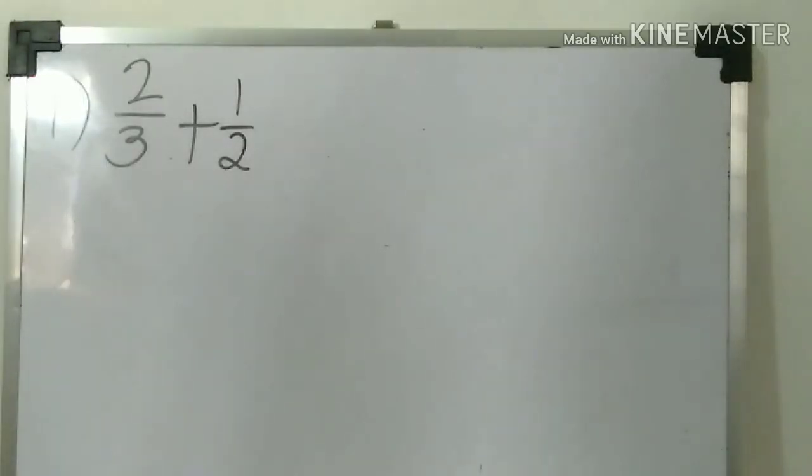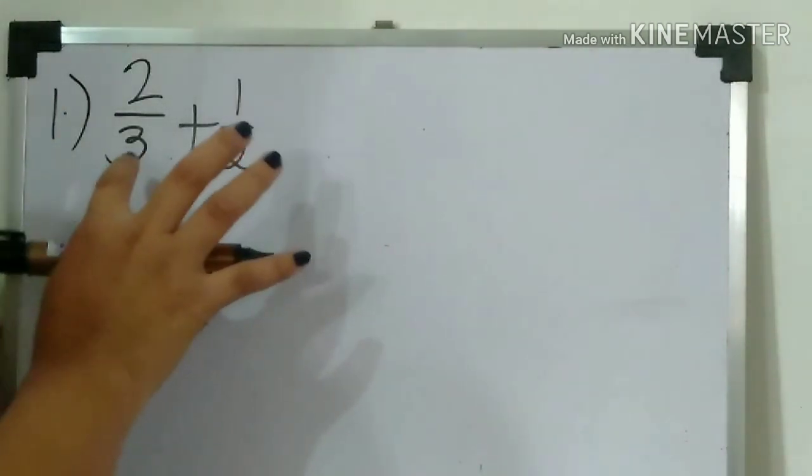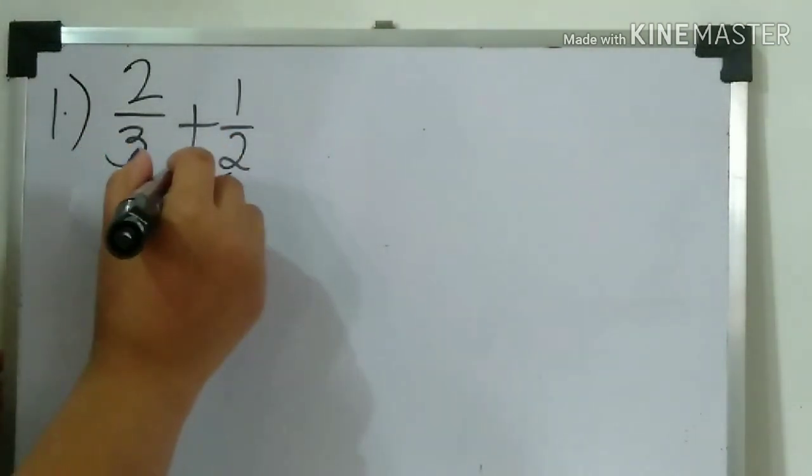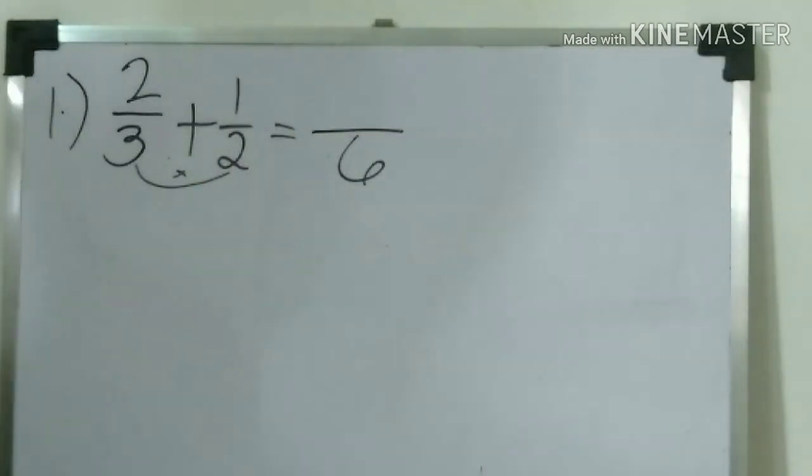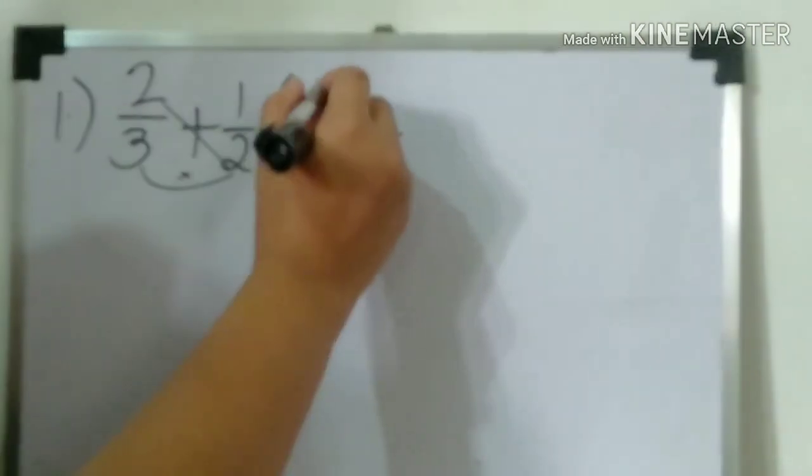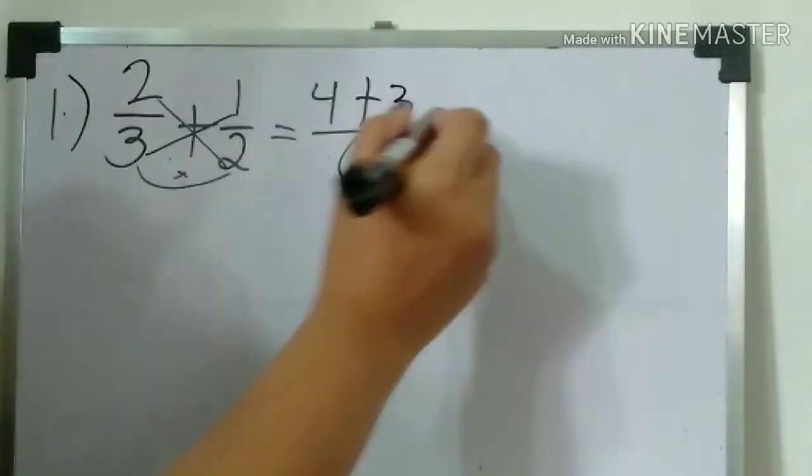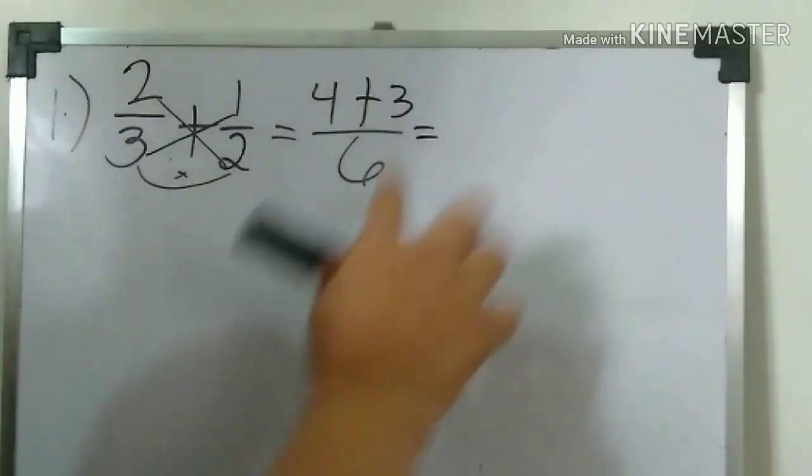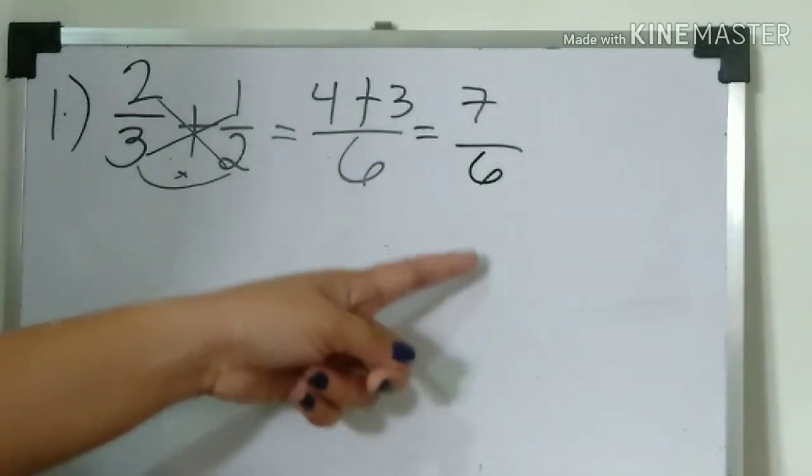Number one: we have two-thirds plus one-half. This is the denominator and the numerator. First step is multiply the denominator. So three times two equals six. Next, cross multiply: two times two equals four, plus three times one equals three.